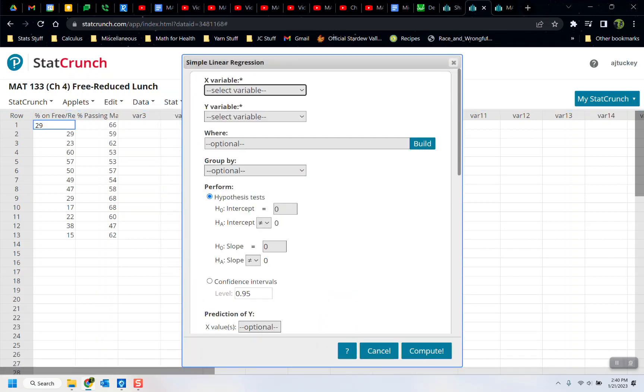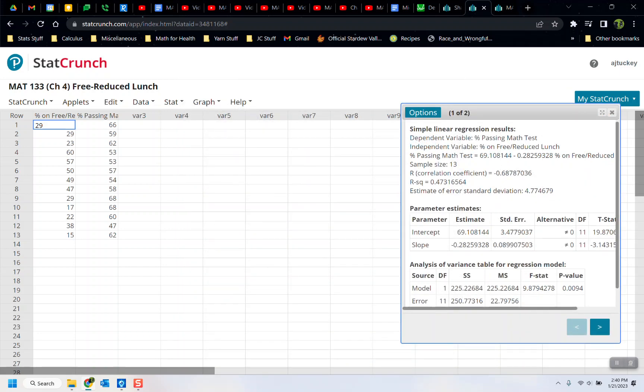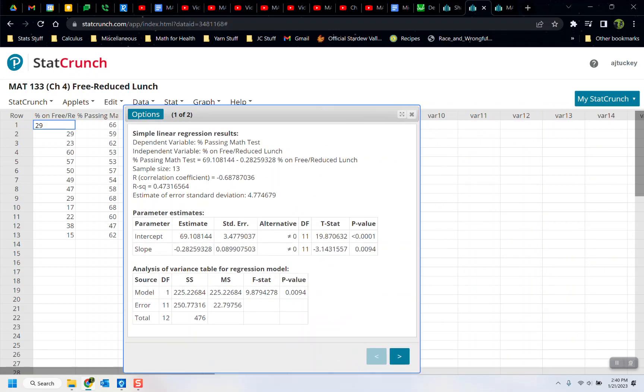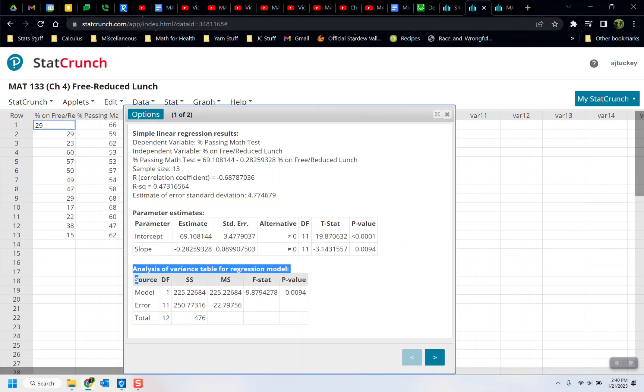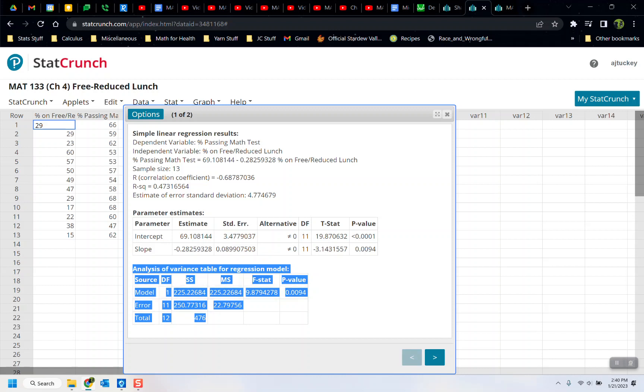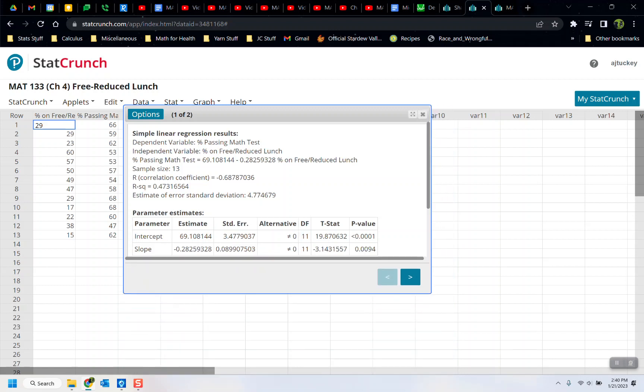And you find this the same way that you found the correlation coefficient: stat, regression, simple linear. There it is, as simple as that. So I'm going to click that, then choose the X variable and the Y variable and say compute.